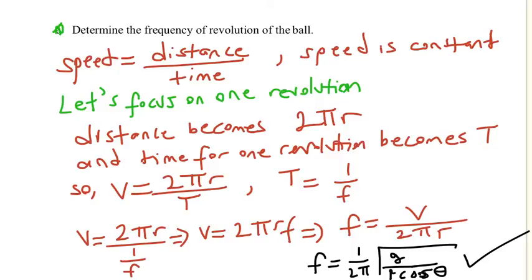Just remember, period is one over F. If you plug that in the formula, what we are going to have is that V equals 2 pi R F. And from there, F becomes V over 2 pi R. And from there, when we plug in the givens and the values we found, we are going to get this result.